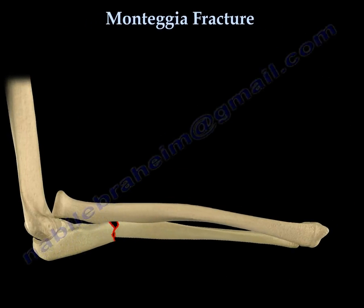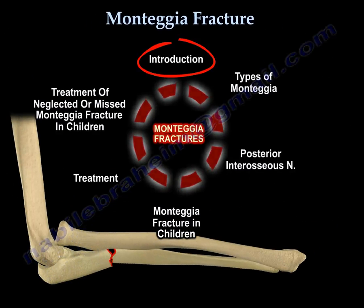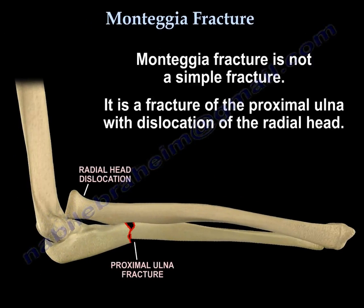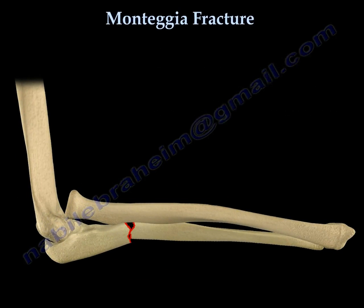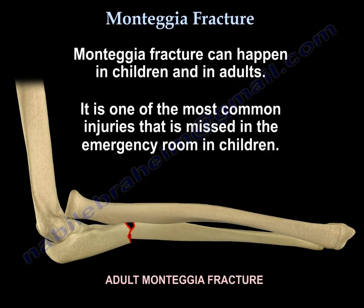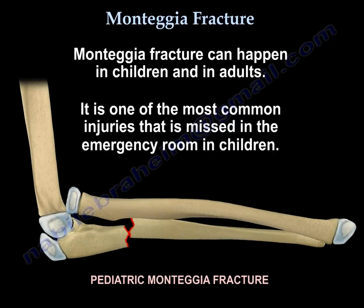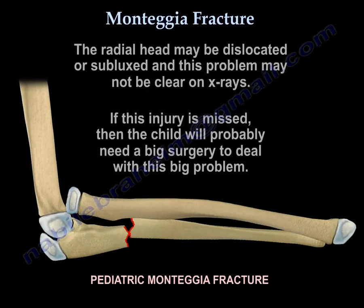Monteggia fracture is not a simple fracture. It is a fracture of the proximal ulna with dislocation of the radial head. It can happen in children and adults. It is one of the most common injuries missed in the emergency room in children. The radial head may be dislocated or subluxed, and this problem may not be clear on x-rays.